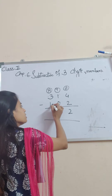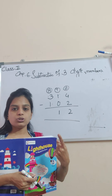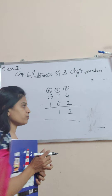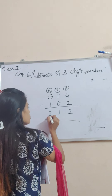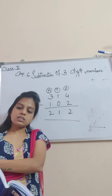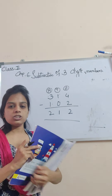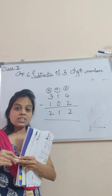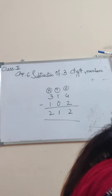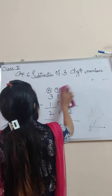Now, 3 minus 1. After 1, count till 3: 2, 3. That is two fingers. So this is your answer. This is nothing but subtraction of three-digit number. Abhi tak aap one's or ten's ki place subtract kar raate the. Ab aage hundreds ki bhi place subtract kar raate.